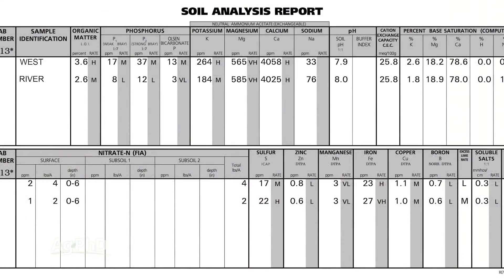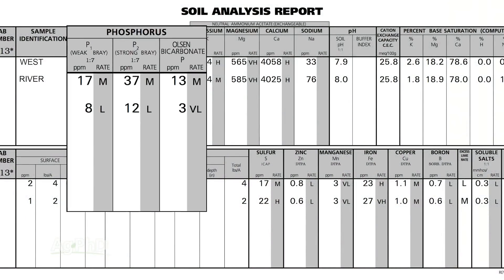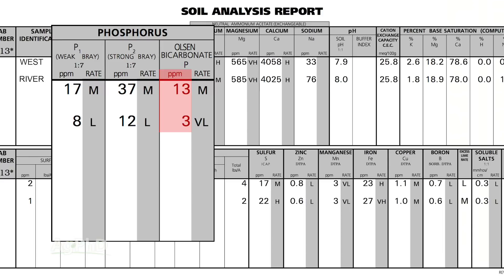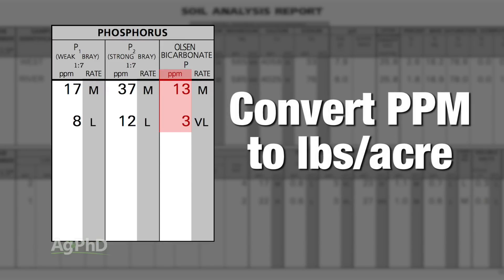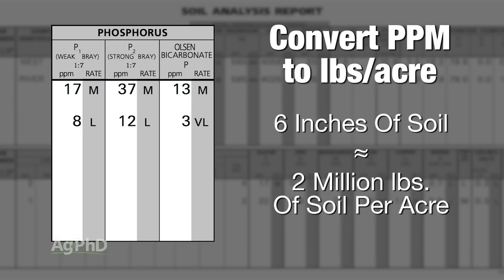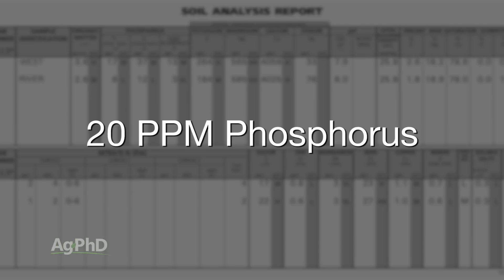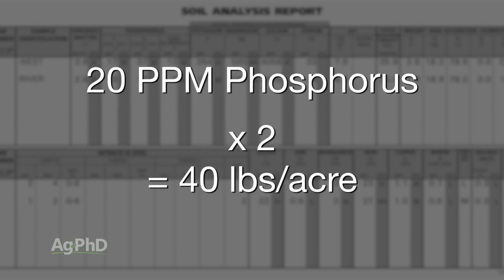Let's talk about that Olsen test a little bit more. What you're probably going to get is a reading in parts per million. How do you convert parts per million to pounds per acre? If you've got 6 inches of soil, you have roughly 2 million pounds across an entire acre. So if you've got a parts per million reading on that soil test — let's call it 20 — simply multiply times 2 to get 40 pounds per acre.